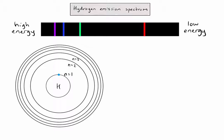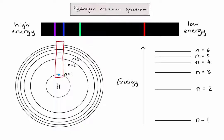Instead of drawing hundreds of circles in an exam, we can simplify this diagram into an energy level diagram, which takes a cross-section and represents it in a simplified form. What Bohr suggested is that each of the frequencies or colours of light seen on the line spectrum represents an electron dropping from a higher energy level down to the second energy level.